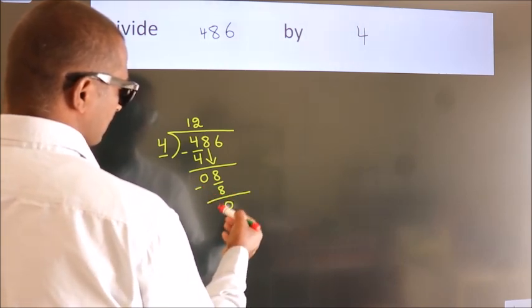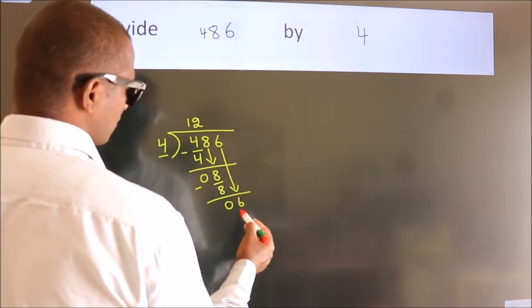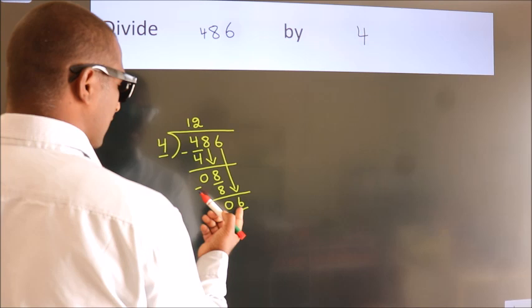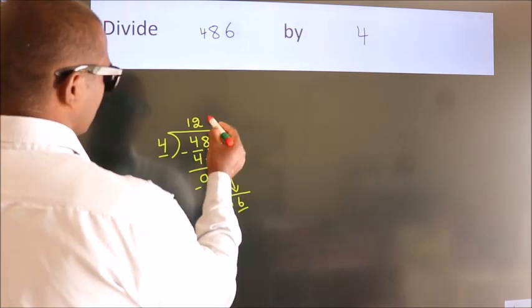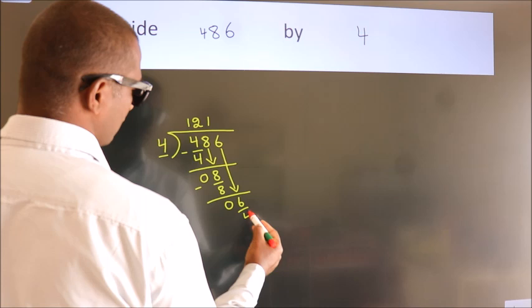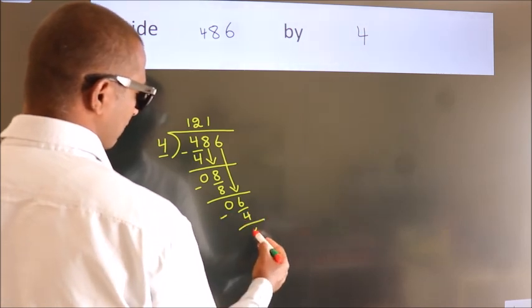After this, bring down the beside number. So 6 down, so 6. A number close to 6 in the 4 table is 4 once, 4. Now we subtract. We get 2.